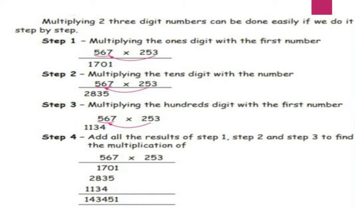Step 3: The last number we are going to multiply. 2 sevens are 14, carry over 1. 2 sixes are 12, plus 1 is 13, balance 1. 2 fives are 10, plus balance 1 is 11. So the answer is 1134. Now we are going to add the first step, second step, and third step answers — that is 1701, 2835, and 1134. When you add everything, you will get the answer 143451.